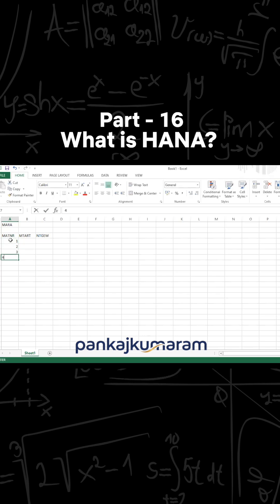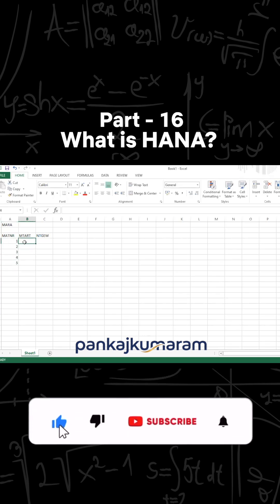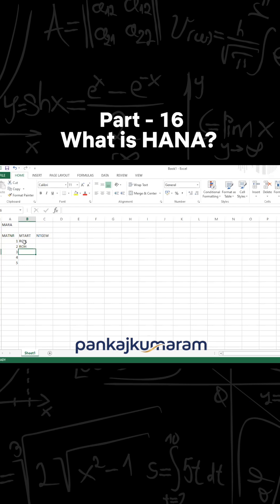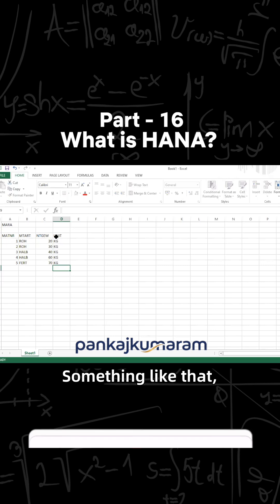The material numbers are one, two, three, four, five. The material type is ROH. Then another field over here with values 20, 30, 40, 60, maybe 70. And the unit here, you can write EA, something like that. We have the data in the format of tables.